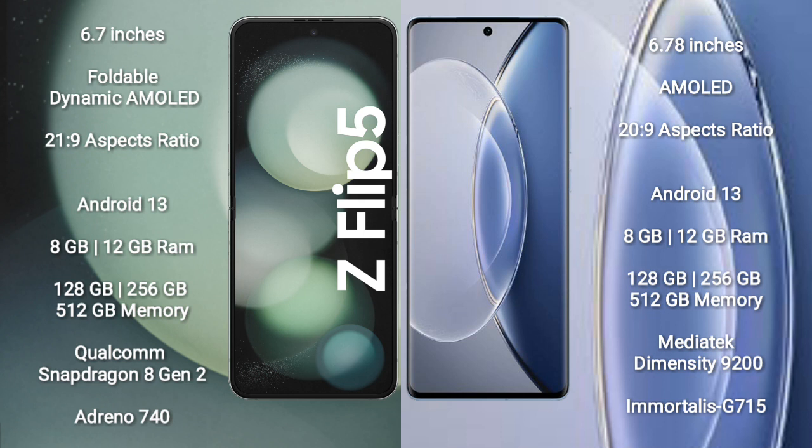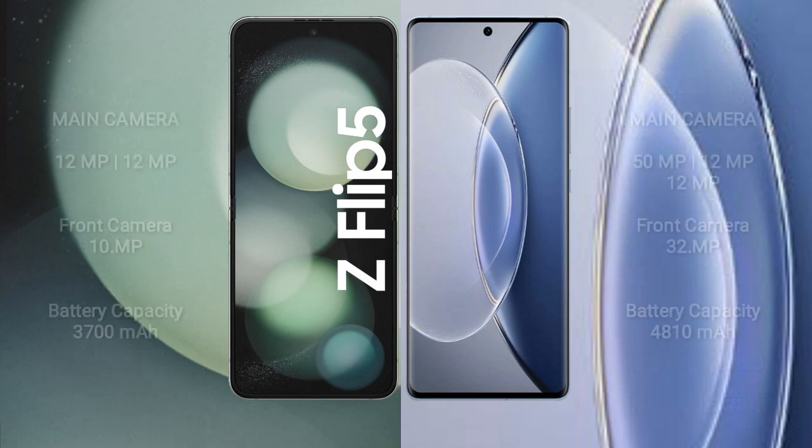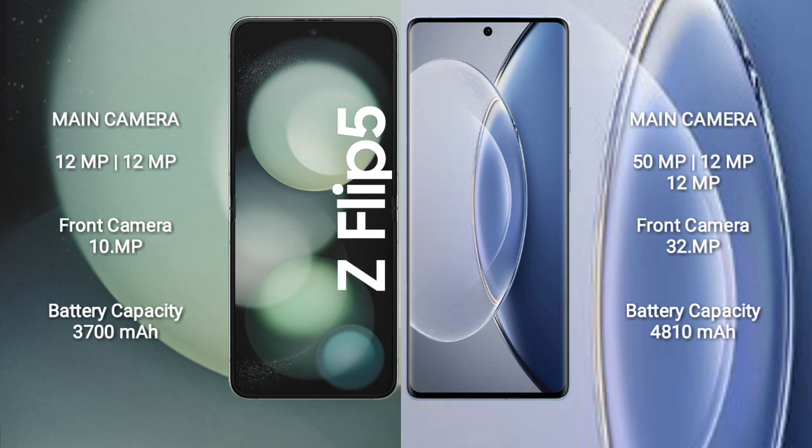Vivo X90 comes with 8GB or 12GB RAM, and 128GB, 256GB, or 512GB internal storage. It is powered by the MediaTek Dimensity 9200 processor with a Mali-G710 GPU.